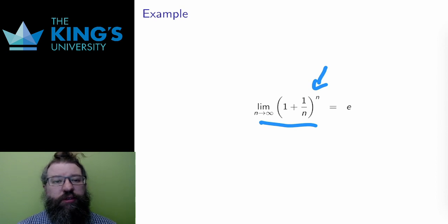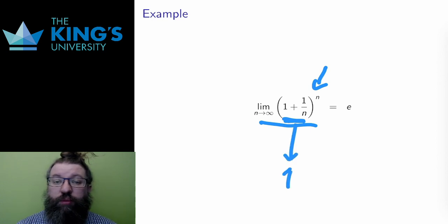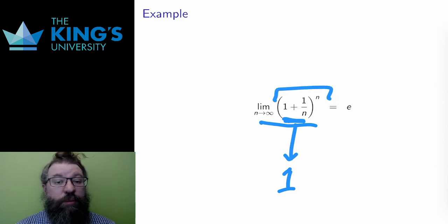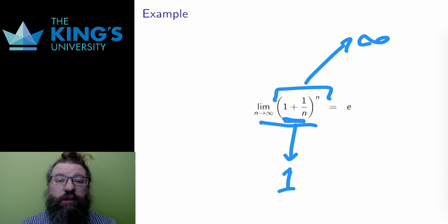There is a tension in this limit. The piece inside the bracket wants to go to 1, and 1 to any power is just 1, and this may imply that the limit wants to go to 1. However, the exponent outside the bracket is getting larger and larger, and the number inside the bracket is larger than 1, and higher and higher powers of any number larger than 1 wants to go to infinity. Therefore, maybe the limit will diverge to infinity.